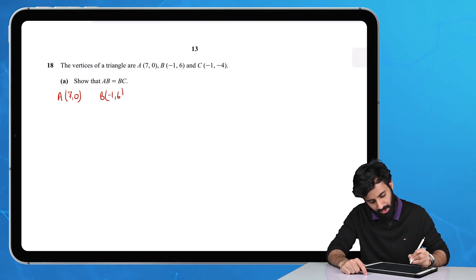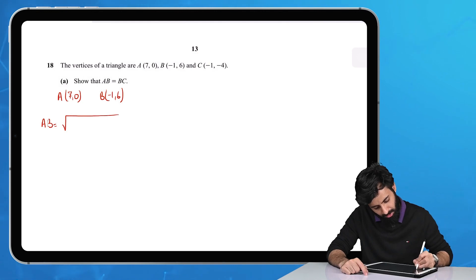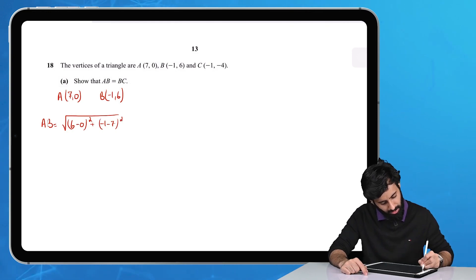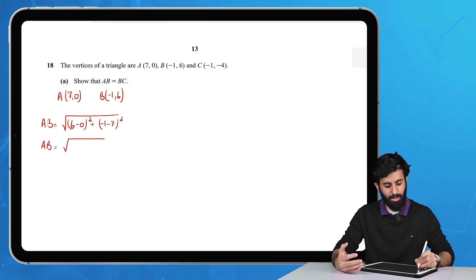To find their length, AB is going to be equal to √[(6-0)² + (-1-7)²]. So AB equals √[(6)² + (-8)²].